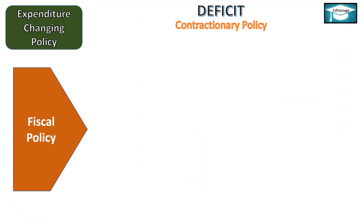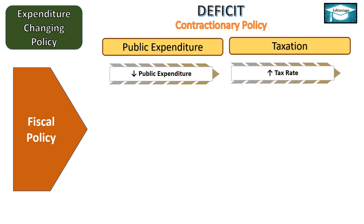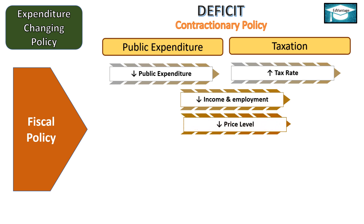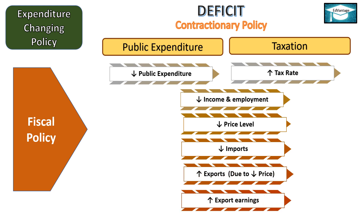Fiscal contractionary policy in case of deficit: The government decreases its public expenditure or increases the tax rate, which results in decrease in income and employment in the economy. Due to decrease in income and employment, the demand for goods and services is reduced, resulting in decrease in price level and decrease in imports. Further, the reduced prices lead to increase in exports and export earnings. Thus there is improvement in balance of payment position and the deficit in the economy is corrected.